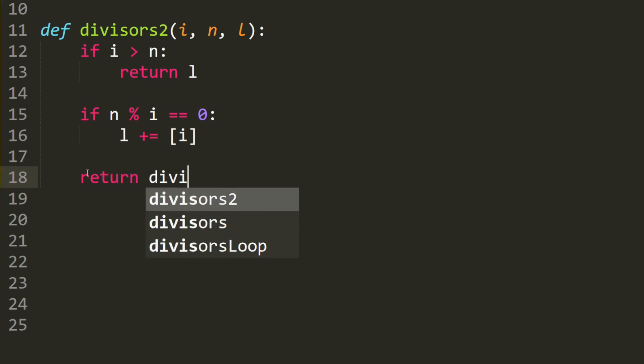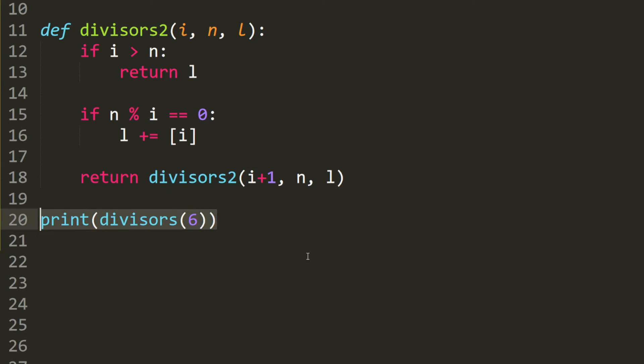Otherwise, we return the divisors 2. And we increment the i. n stays the same. And we put l in there. Let's go ahead and test it.